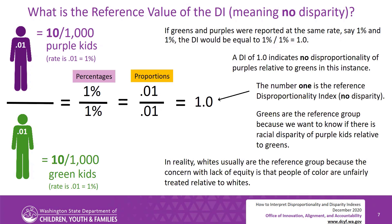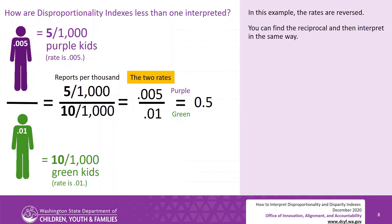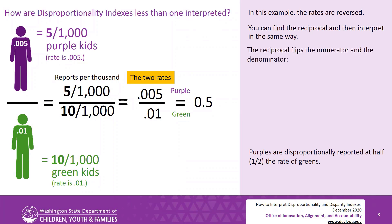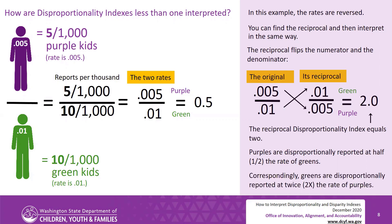In reality, whites usually are the reference group because the concern with lack of equity is that people of color are unfairly treated relative to whites. When a disproportionality index is less than one, you can find the reciprocal and then interpret it in the same way. In this example, the rates are reversed — purples are disproportionately reported at half, one-half, the rate of greens. The reciprocal flips the numerator and denominator: the original 0.005 divided by 0.01, and its reciprocal is 0.01 divided by 0.005, giving a reciprocal disproportionality index of 2. Correspondingly, greens are disproportionately reported at twice the rate of purples.